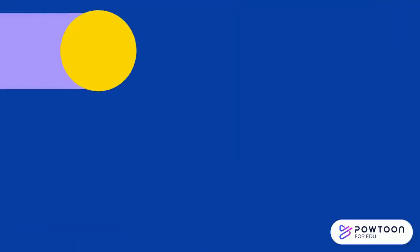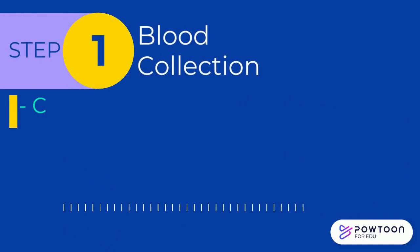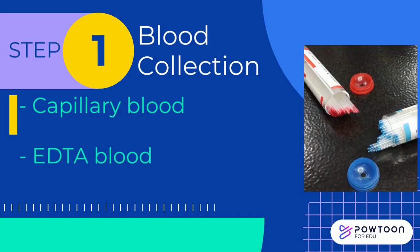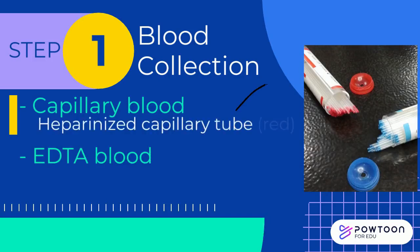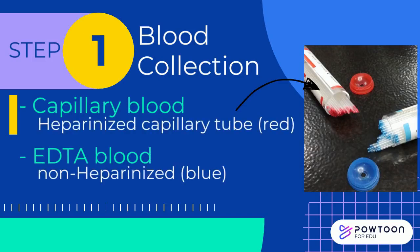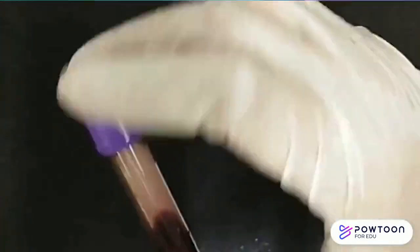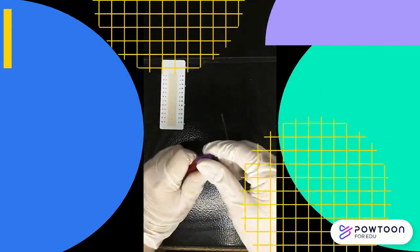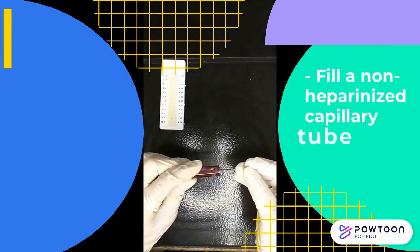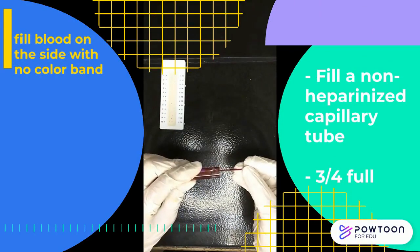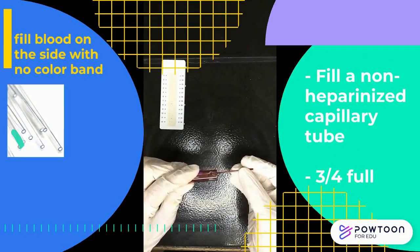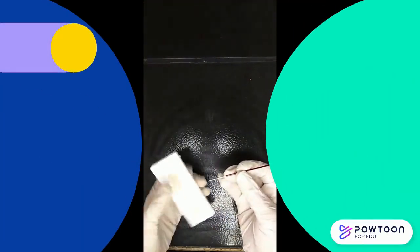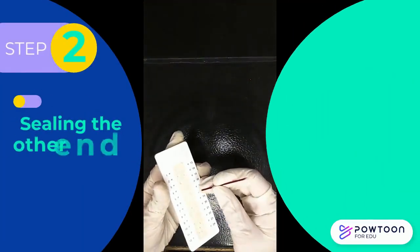Procedure for the Clay Adams method. Step 1 — Blood collection: capillary blood or anticoagulated blood may be used. For capillary collection, use a heparinized capillary tube as it contains anticoagulant. For this demonstration, EDTA anticoagulated blood was collected. Fill a non-heparinized capillary tube with blood about three-fourths full. Note that the side with no collar band should be used.